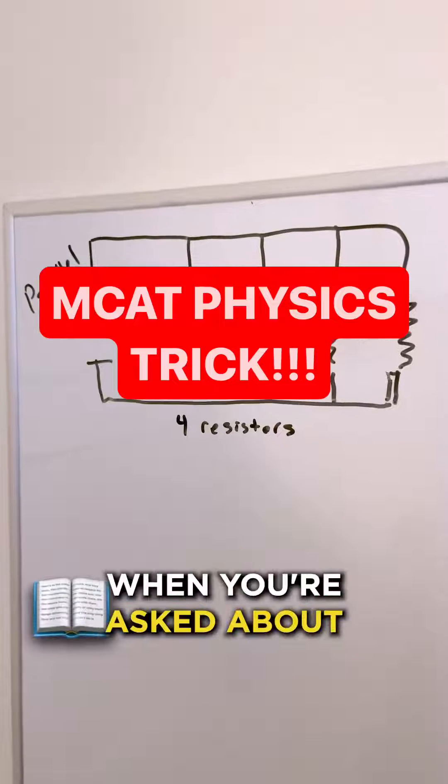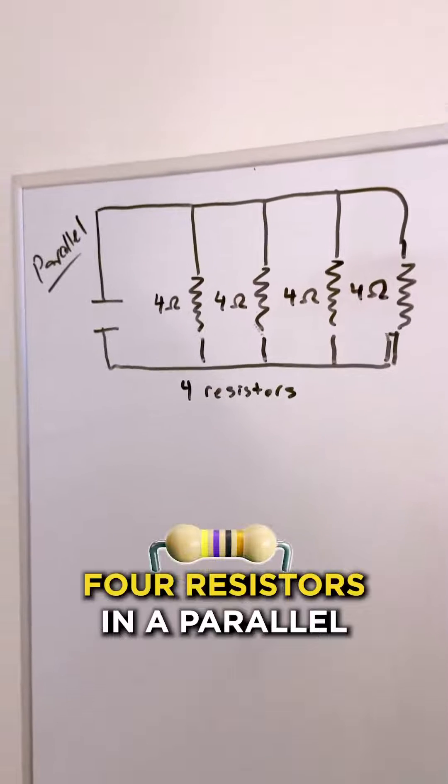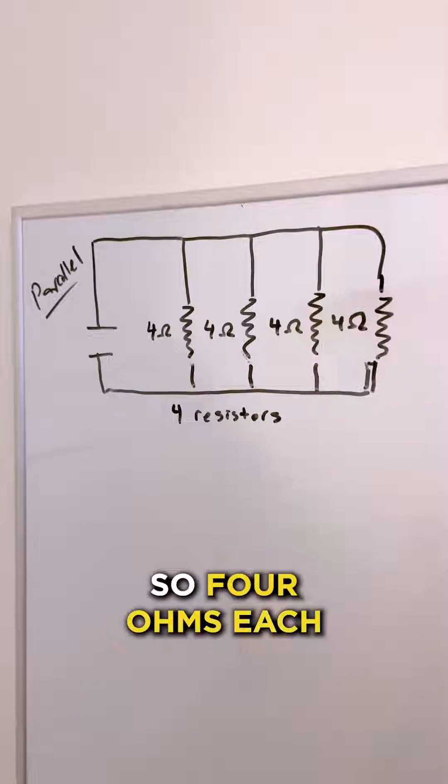This tip is going to be helpful when you're asked about equivalent resistance in parallel circuits. Here we have four resistors in a parallel circuit, so four ohms each.